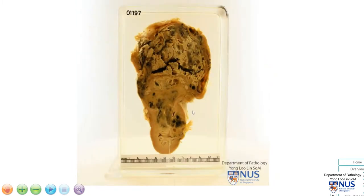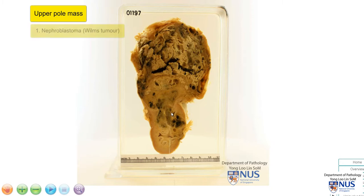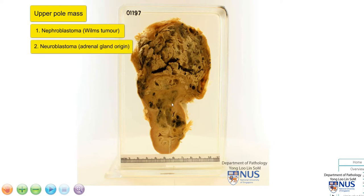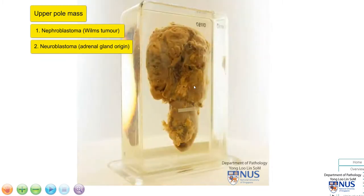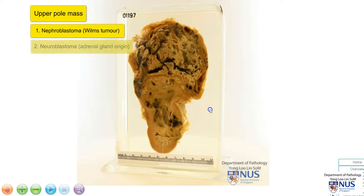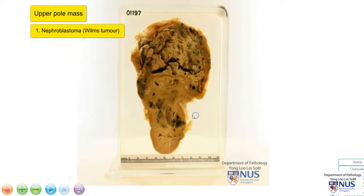So what we have is a very large upper pole tumor in the kidney of a child. The differential diagnosis here would be a tumor of the kidney itself, and that would be nephroblastoma or Wilms tumor in a child. The other differential would be a tumor of the adrenal gland, and in a child, this would be a neuroblastoma. This tumor appears to be within the confines of the renal capsule, and histologic examination proves it to be a nephroblastoma or Wilms tumor.